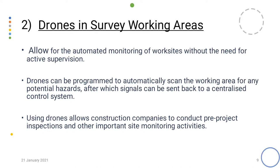The second example is drones in survey and working areas. Drones allow for automated monitoring of work sites without the need for active supervision. For finding coordinates and locating positions, we normally use manual GPS and have to go to the location ourselves, but with the help of drones it becomes easier. Drones can be programmed to automatically scan the working area for any potential hazards, after which signals can be sent back to a centralized control system. Using drones also allows construction companies to conduct pre-project inspections and other important site monitoring activities.